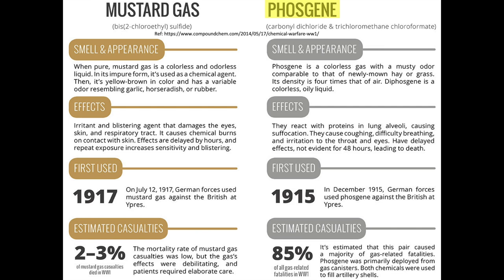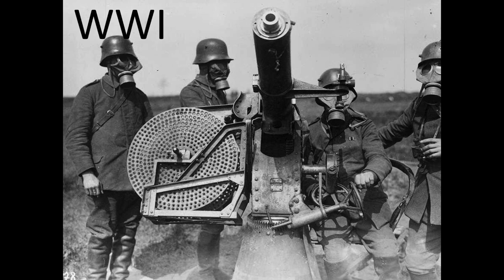Phosgene gas, on the other hand, is considered a non-persistent chemical agent. Non-persistent chemical agents are gases that will dissipate and lose their ability to cause casualties within a couple of hours. The victim's lungs will react with the gas, causing suffocation. Phosgene gas was used in World War I and accounted for about 85% of the war's poison gas deaths. Phosgene gas is considered around 6–10 times more deadly than chlorine gas.